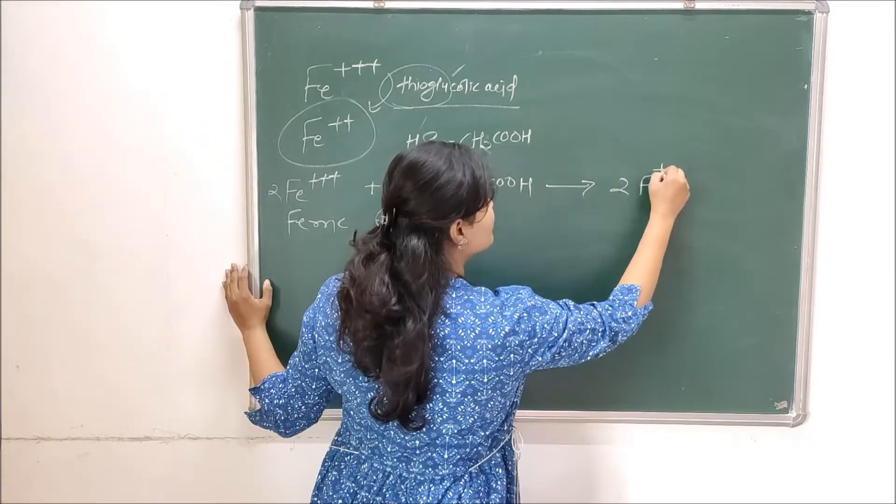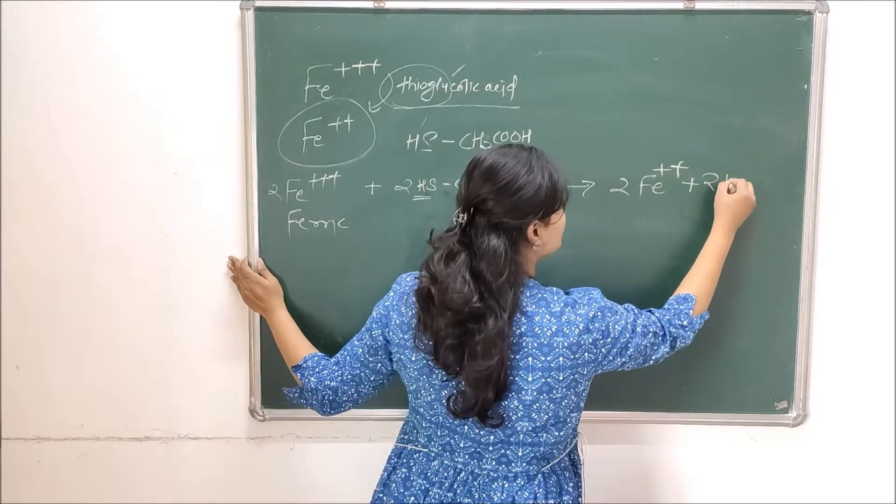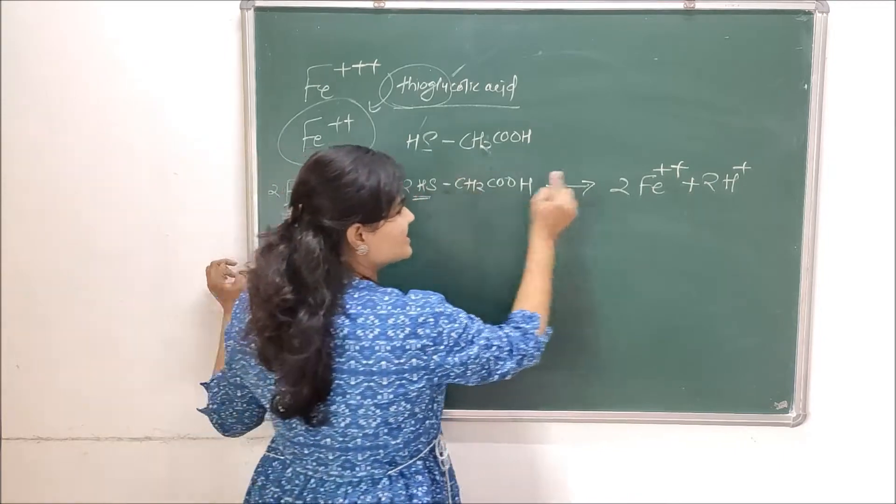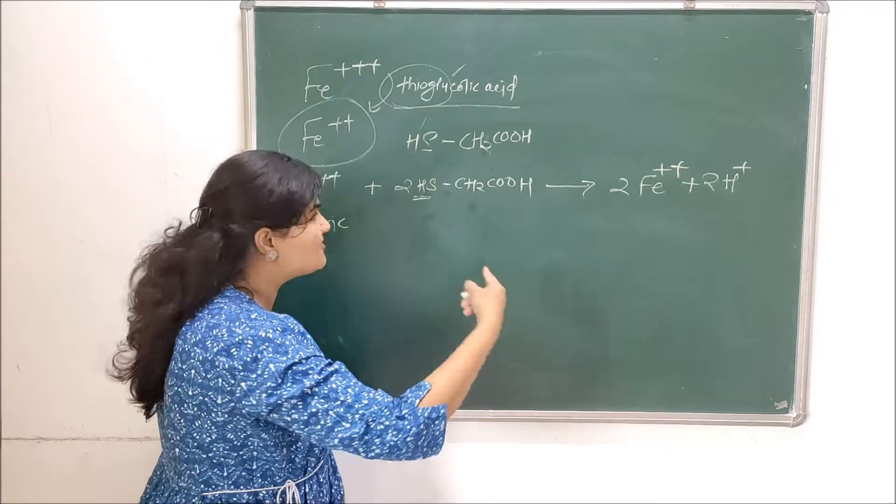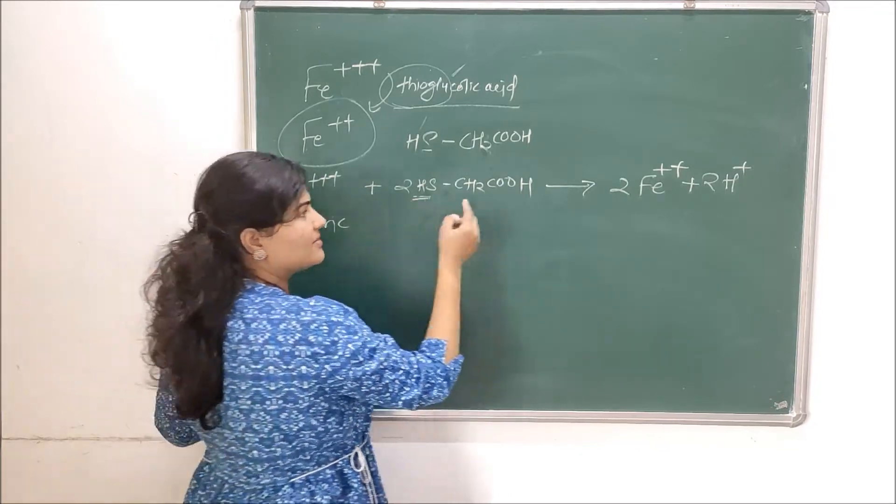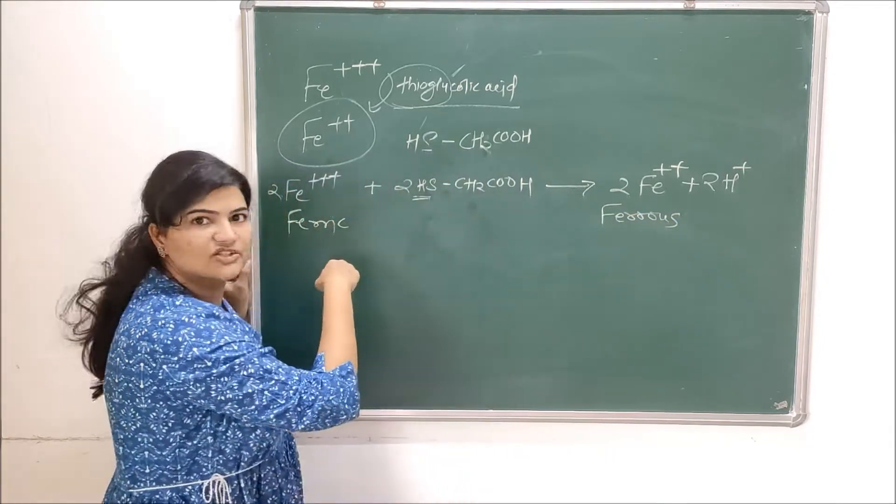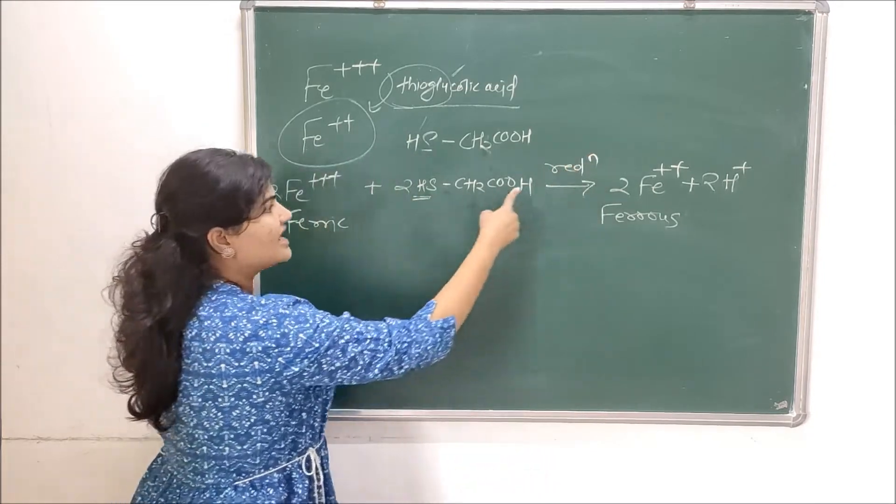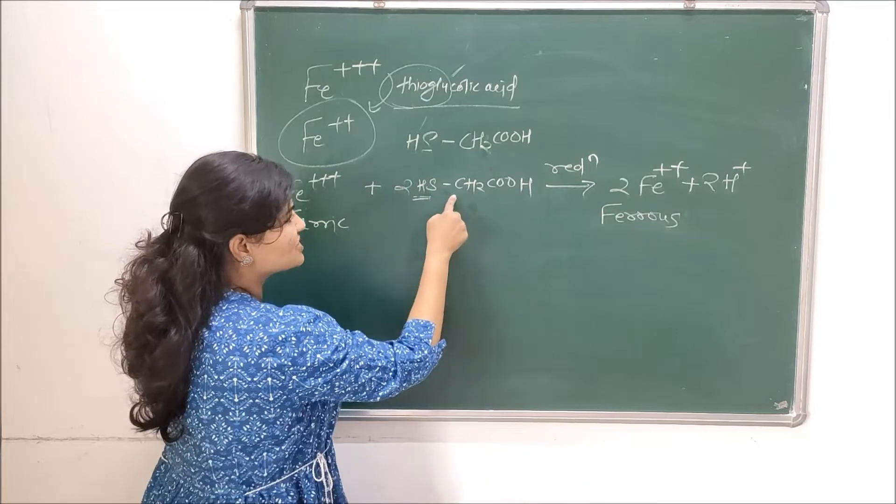This gives you two Fe²⁺ and these hydrogen ions will be removed as protons. These are removed as protons means the electrons which it gave away were utilized by the ferric iron to form ferrous ions. So gain of electrons is a reduction, so here ferric ions are reduced to give you ferrous ions.